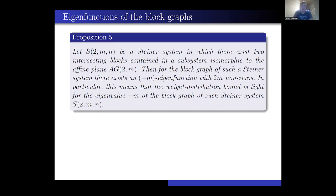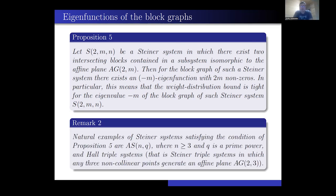Let S(2, m) be a Steiner system in which there exist two intersecting blocks contained in a subsystem isomorphic to the affine plane AG(2, m). Then for the block graph of such a Steiner system there exists a minus-m eigenfunction with 2m non-zeros; in particular the weight distribution bound is tight for eigenvalue -m. Natural examples of such Steiner systems are affine Steiner systems where the dimension is at least 3 and q is a prime power, and Hall triple systems — Steiner triple systems in which any three non-collinear points generate an affine plane AG(2, 3).